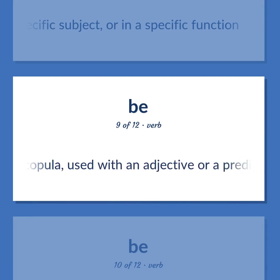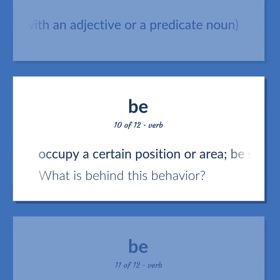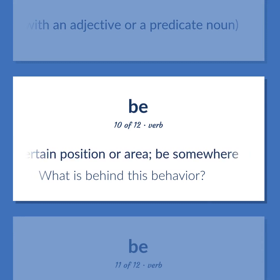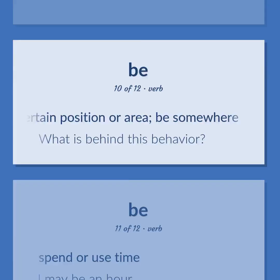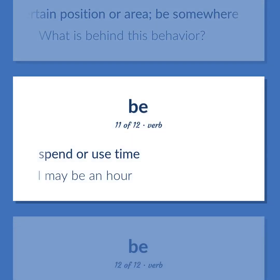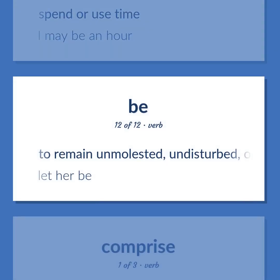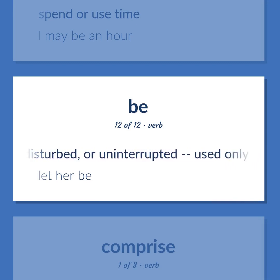Copula, used with an adjective or a predicate noun. Occupy a certain position or area; be somewhere. What is behind this behavior? Spend or use time. I may be an hour. To remain unmolested, undisturbed, or uninterrupted — used only in infinitive form. Let her be.